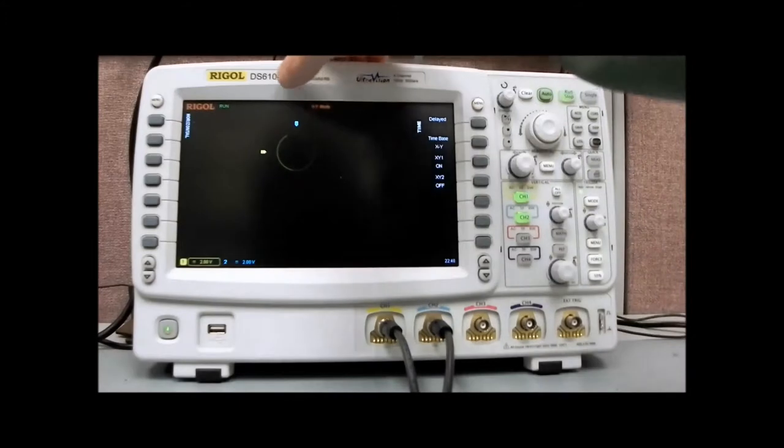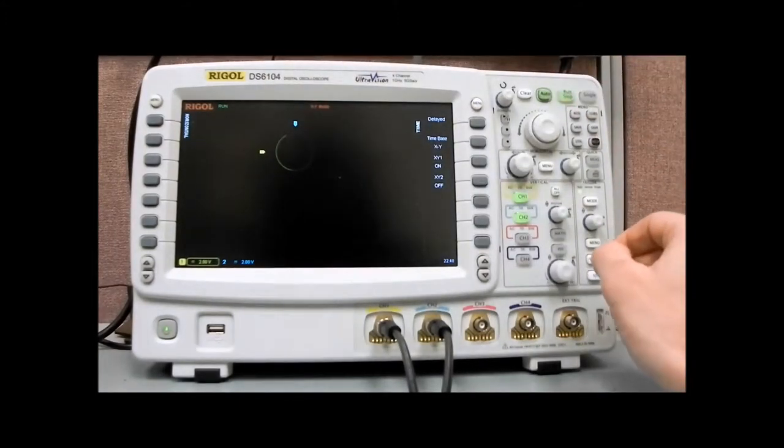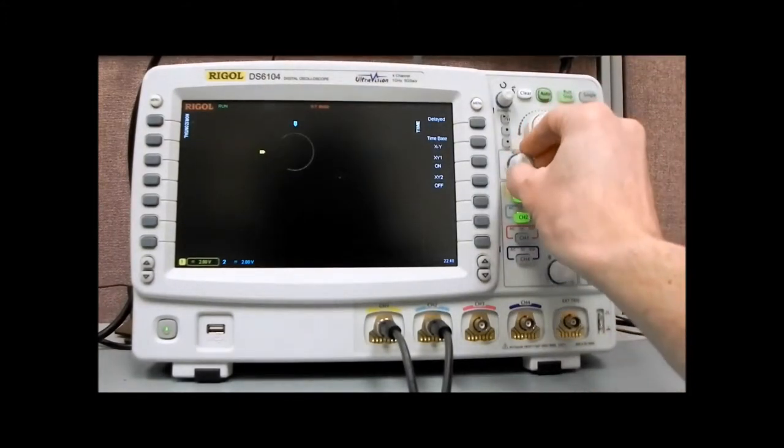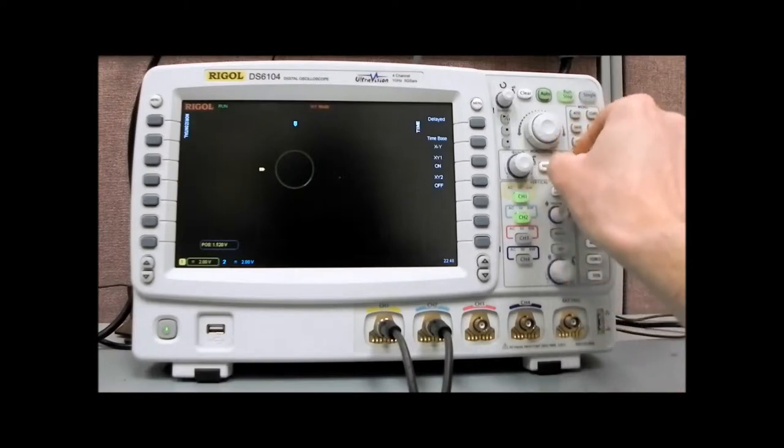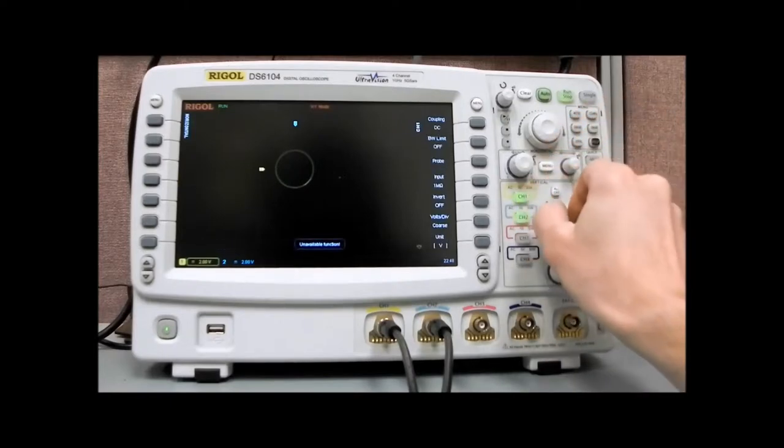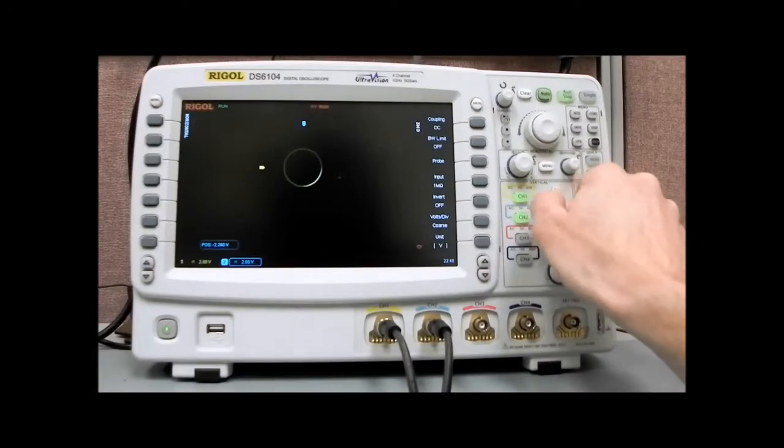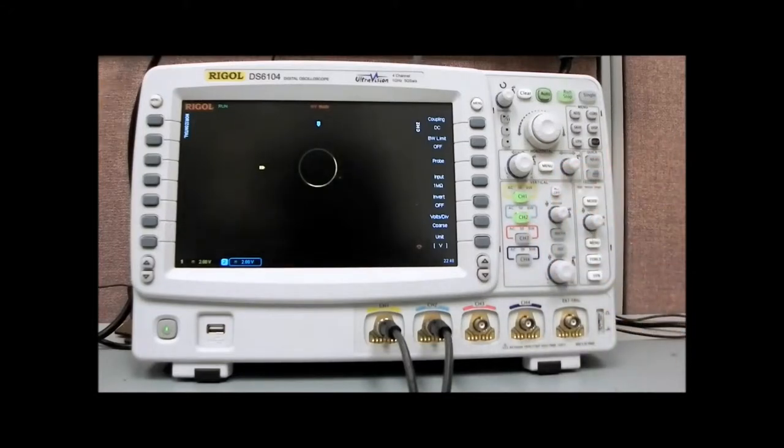Again, the horizontal is going to adjust our sample rate. We have 500 mega samples per second, so we can actually change that. And also, we can change the location, and I guess we can center it up a little bit, channel two. Remember, channel one is going to be one axis, channel two is the other axis. So we can center that up a little bit. And now what we have is that we have a perfect circle, because these are 90 degrees out of phase.